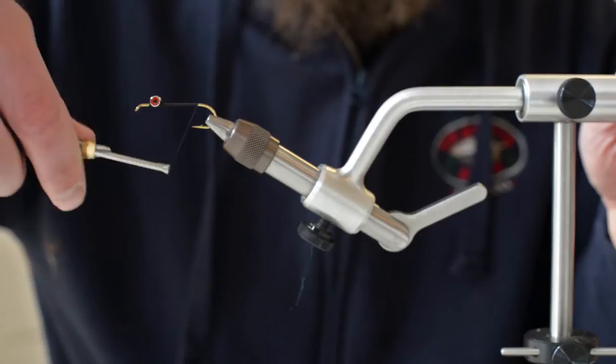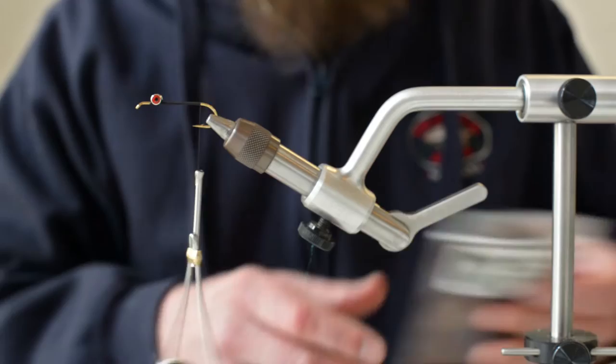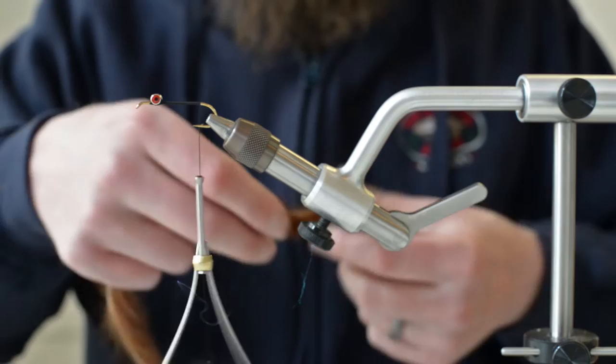And I'll put a few more thread wraps over that. I'm really building up quite a head on it there. And then at that point, I'm pretty happy with it. I'll just go ahead and bring my thread all the way down, almost to the end of the shank there. I want to leave a little bit of space because what I'm going to do here is poke brown rabbit zonker strip through.